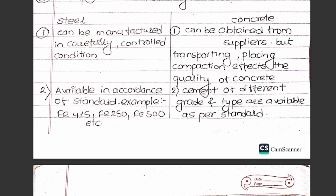The first difference is: can we manufacture in carefully controlled conditions? If we are in a factory, it is a controlled environment. The concrete effect — we have cement, sand, and aggregate with water. We can prepare it on site, or it can be obtained from a supplier. But transporting, placing, and compaction affect the quality of concrete.